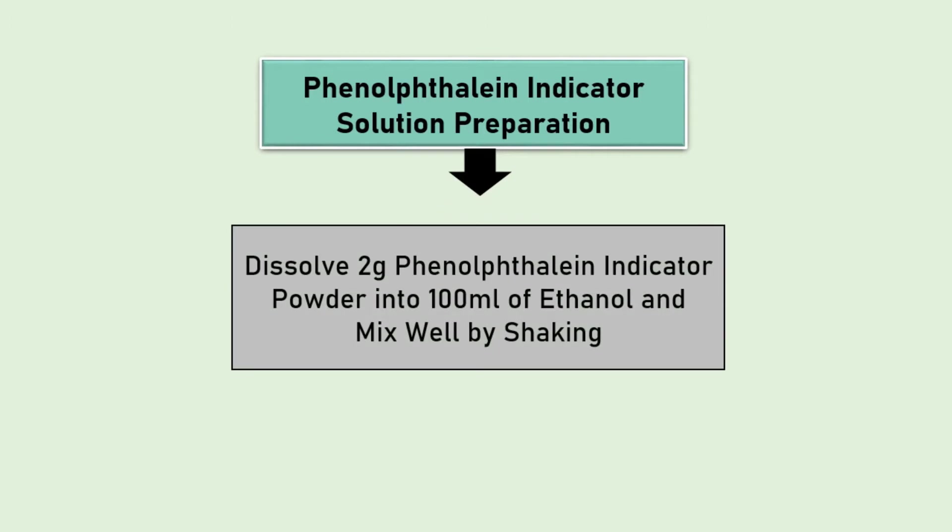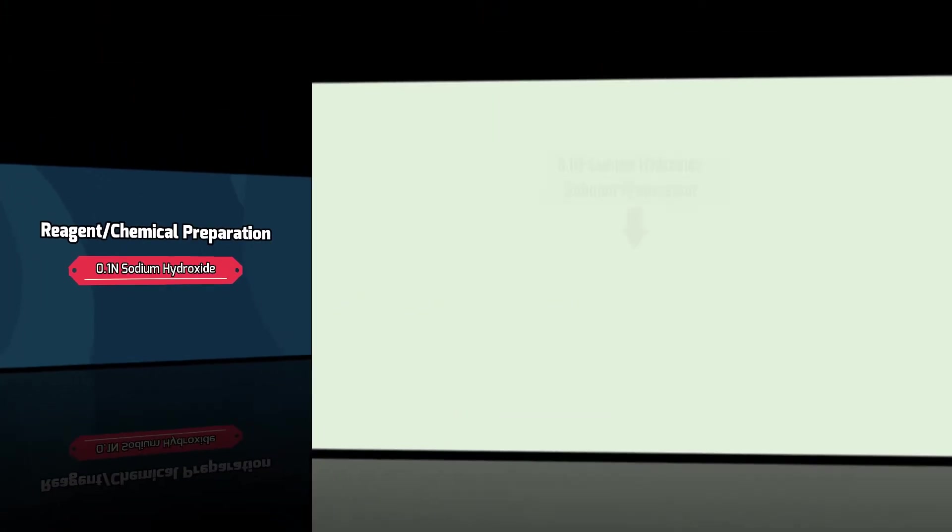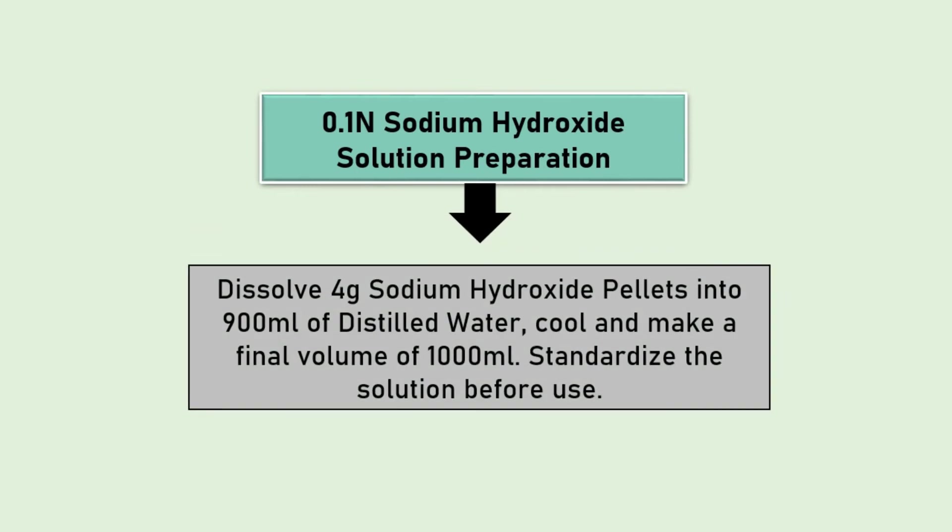First, we can prepare phenolphthalein indicator by simply dissolving 2 grams of phenolphthalein powder in 100 ml ethanol. For the preparation of 0.1 normal sodium hydroxide, dissolve 4 grams of sodium hydroxide pellets with 900 ml distilled water and make the final volume of